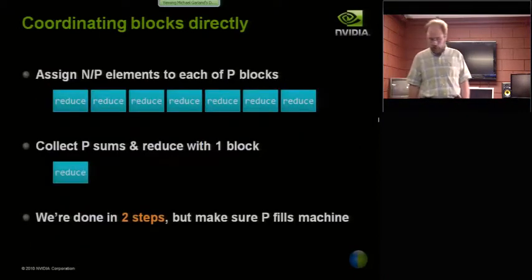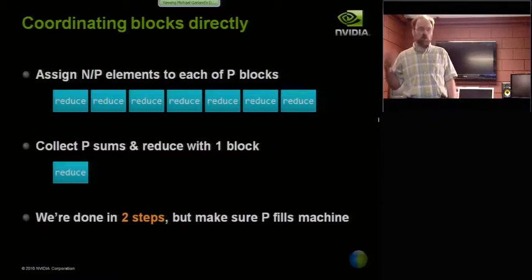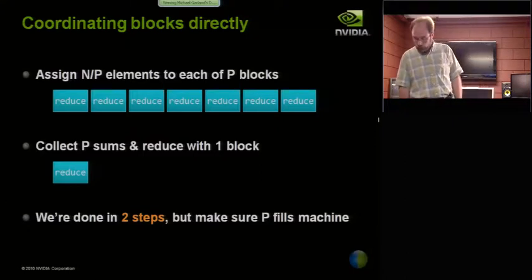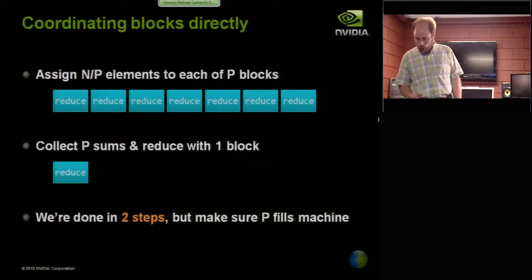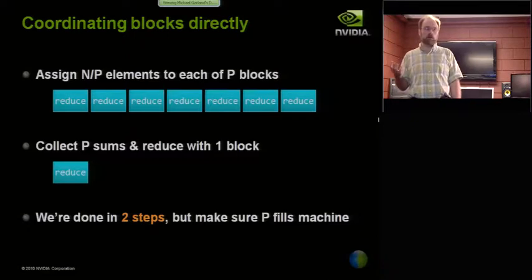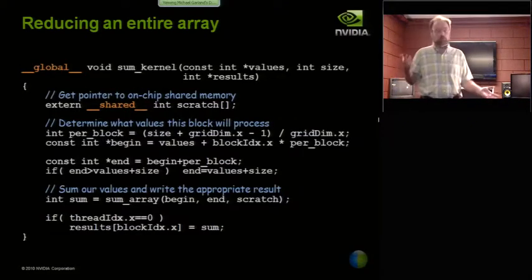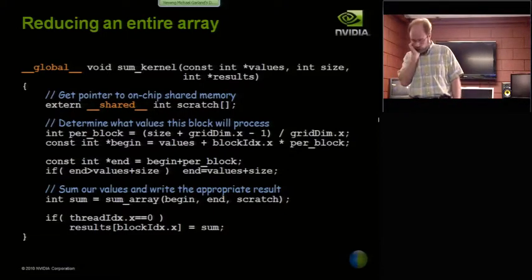So to go back to my earlier diagram, the way this would work is I just pick, I know n, I pick p, I fix my block size to be whatever I want, say 256 or something like that, and then I call this sum kernel with the appropriate values. It will produce one partial sum per block, write them out, and then I just call it again with one block instead of p blocks, and give it the array of partial sums that I just created in the first step. And once I've done that, it's over.